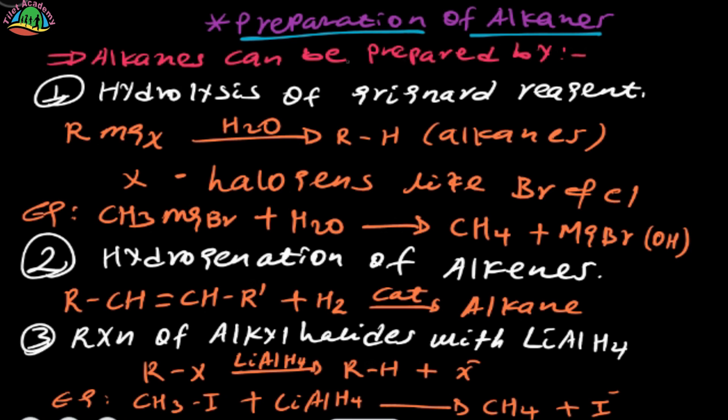Alkenes can be prepared by hydrolysis of the reagent. We have the Alkyl group combined with magnesium halide — magnesium halide.